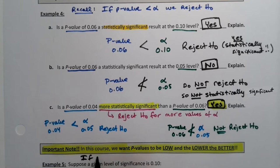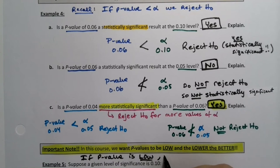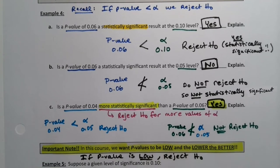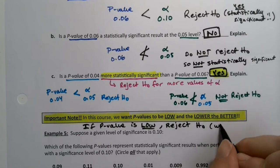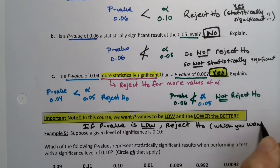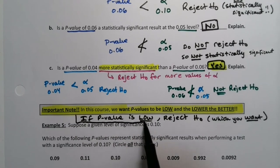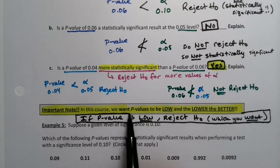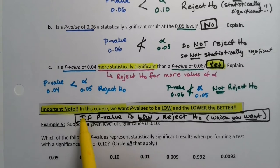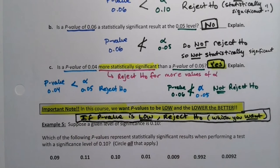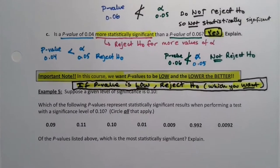That leads to a very important note: you want p-values to be low — the lower, the better. Because if they're lower, that means it's more statistically significant and you would get to reject H-naught more often. When your p-value is low, you reject H0, and you want to reject H0 — you want statistical significance. You'll only get to do that if your p-value is low. That's why you want the lowest p-value you can get.